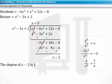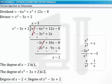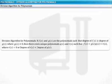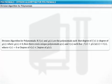Here, the degree of the remainder, x minus 2, is 1, but the degree of the divisor is 2. This implies that division is not possible if the degree of the remainder is less than the degree of the divisor. In general, the division algorithm for polynomials states that if f of x and g of x are polynomials such that the degree of f of x is greater than or equal to the degree of g of x, where g of x is not equal to 0, then there exist unique polynomials such that f of x is equal to g of x into q of x plus r of x, where r of x is equal to 0 or the degree of r of x is less than the degree of g of x. This is known as the division algorithm for polynomials.